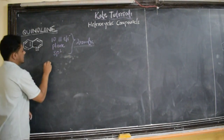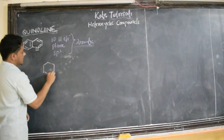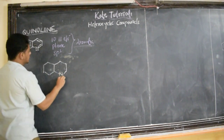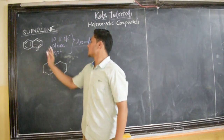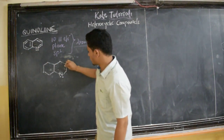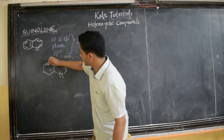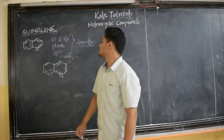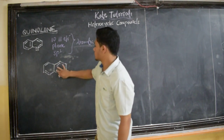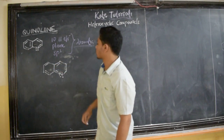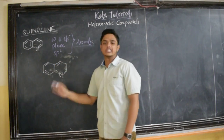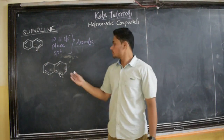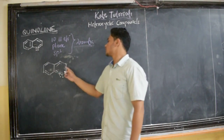Now let us discuss one more thing, that is resonance. If I write the quinoline structure like this — I have written it in this way. If I set the double bonds here, double bond, double bond, double bond, double bond — then also, no problem, because all are in conjugation. I may write it this way or I may write it this way. Both are the same structure because all are in conjugation.